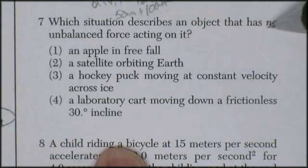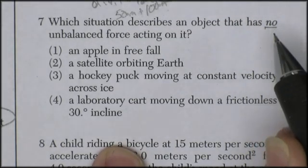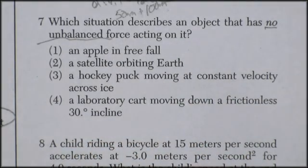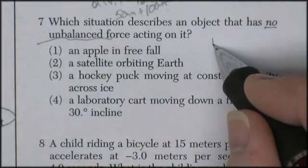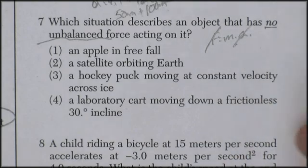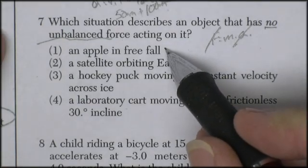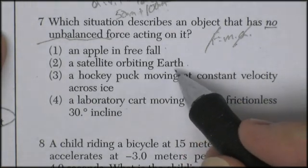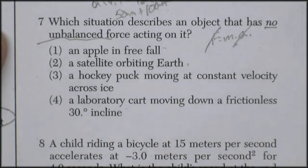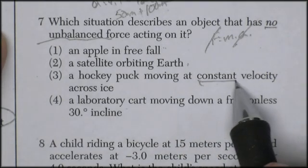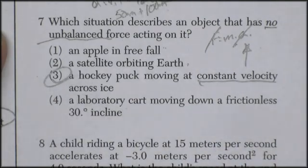Question seven. Which situation describes an object that has no unbalanced force acting on it? No unbalanced force. So that's kind of like it has a balanced force. There's nothing pushing it. Well, force equals mass times acceleration. No force means no acceleration. So we're looking for an object that is not undergoing acceleration. An object in free fall tends to be accelerating. A satellite orbiting the Earth, that satellite could be an apple in free fall. A hockey puck moving at a constant velocity. Constant velocity means zero acceleration. So I'm going to guess this is the right answer. A laboratory cart moving down a frictionless 30 degree incline. I don't know if you've ever been below one of these things, but they pick up speed. They accelerate. Net force. Correct answer is three.